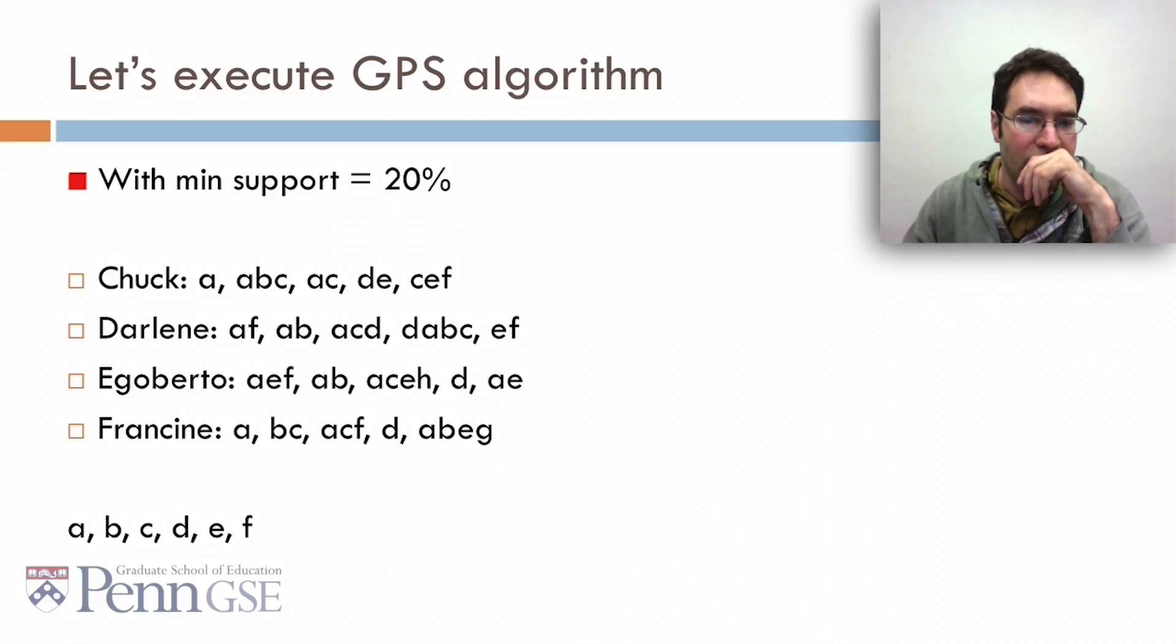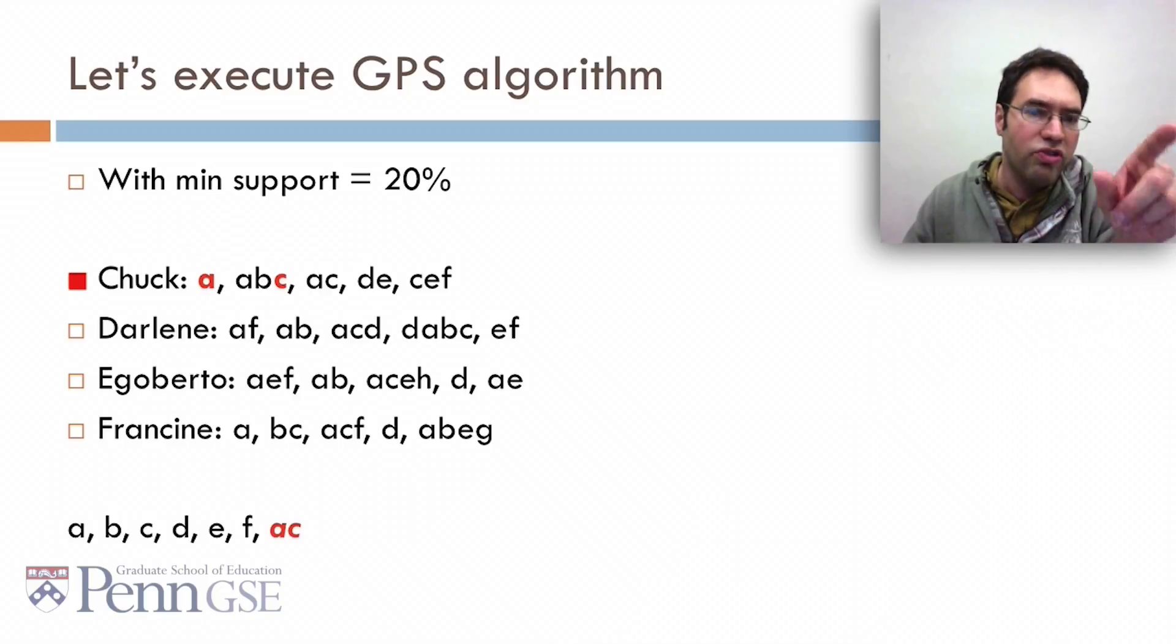We start with A, B, C, D, E, and F. Does AC have support over 20%? Let's look. Chuck has A and then C. Here's another A and then C for Chuck. And another one. Now we go to the next A and keep that next A.